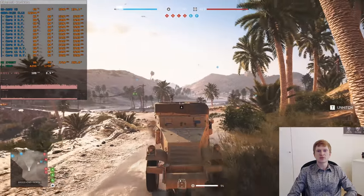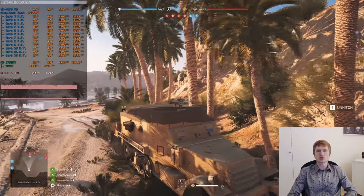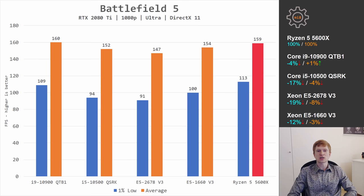Now for gaming. In Battlefield 5, the Ryzen 5 5600X delivers slightly better 1% lows than the Core i9-10900, beating it by 4%, while average FPS is nearly identical at 160 vs 159. The Core i5-10500 delivers 152 FPS average — 4% worse — but 1% lows are 17% worse. The Xeon E5-2678v3 loses 19% and 8% to Ryzen 5. The overclocked Xeon E5-1660v3 loses 12% and 3%.